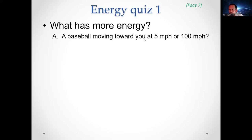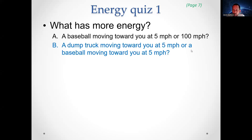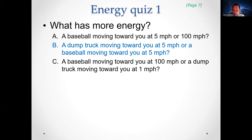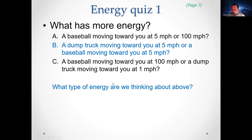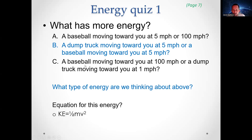Energy quiz: which has more energy — a baseball at 5 mph or 100 mph? The 100 mph one would hurt more. A dump truck or baseball both at 5 mph? The dump truck. Baseball at 100 mph or a dump truck at 1 mph? That one requires an equation because one has more speed and one has more mass. We're talking about kinetic energy, and the equation is KE = ½mv². With that, you can compare which has more energy when both mass and speed differ.